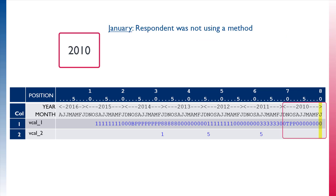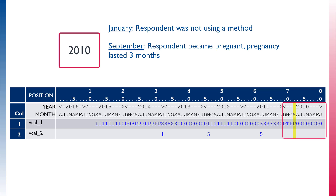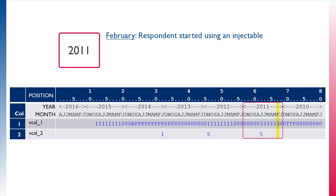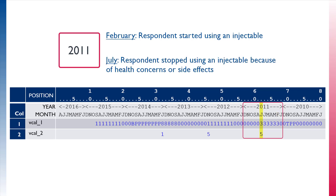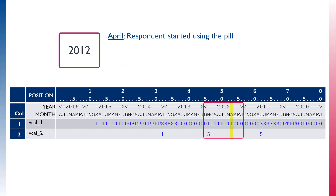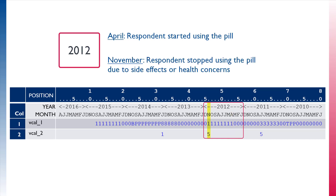In January of 2010, the beginning of the calendar period, there was no contraceptive method being used by the respondent, nor was she currently pregnant. In September the respondent became pregnant, and after three months of pregnancy the pregnancy ended in February 2011. The respondent started using an injectable, and in July she stopped using the injectable because of health concerns or side effects.